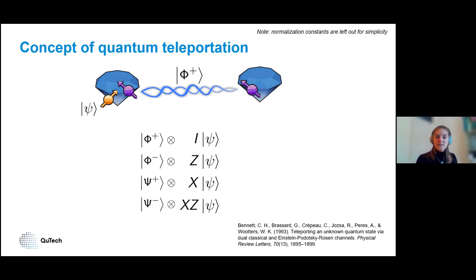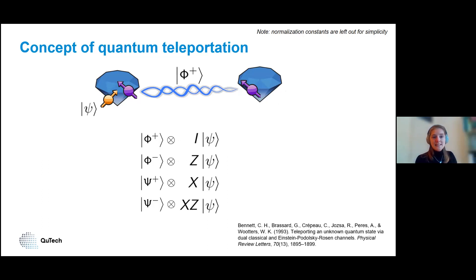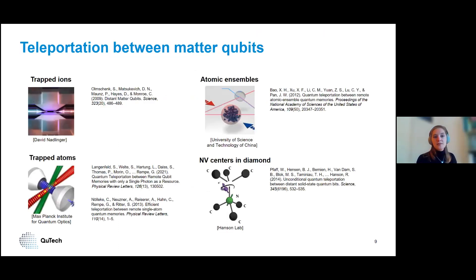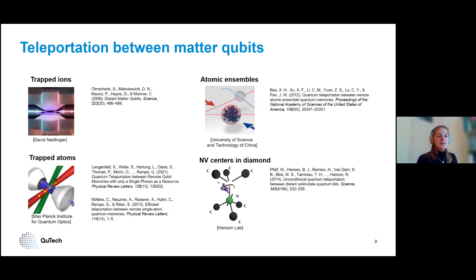Teleportation means that on one side your information disappears, and on the other side your information appears. Not only did people do this in the late 1990s with photons, but also in the last ten years with matter qubits, forming entangled pairs between distant matter qubits and performing the teleportation step. This has been done in various platforms: trapped ions, trapped atoms, atomic ensembles, and here in Delft with NV centers in diamond.